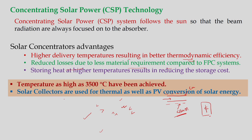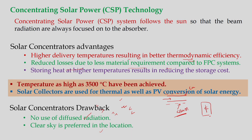Solar collectors are used for thermal as well as PV conversion of solar energy. There are some drawbacks: we cannot employ diffuse radiation for energy conversion. Only beam radiation is applied in case of CSP, and that is why we need a clear, cloudless sky for installation of these devices.